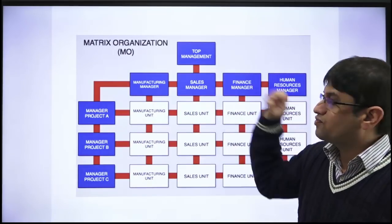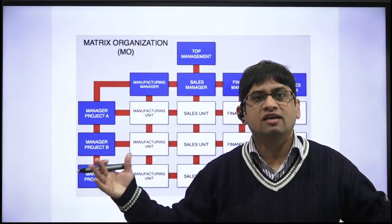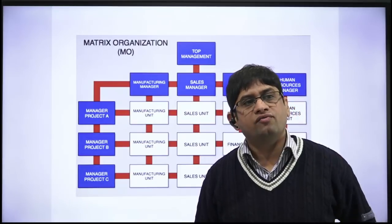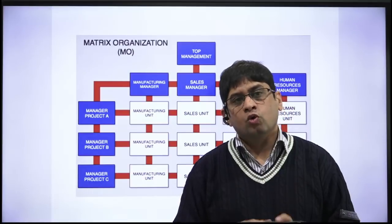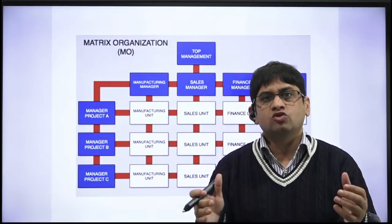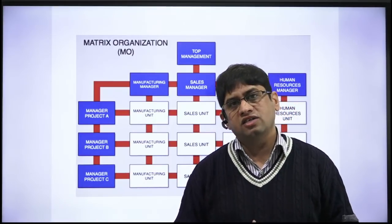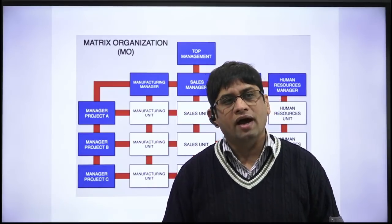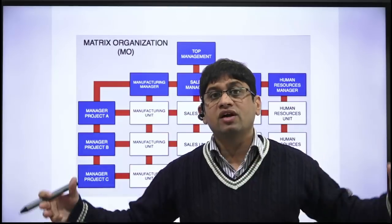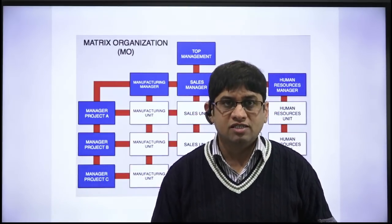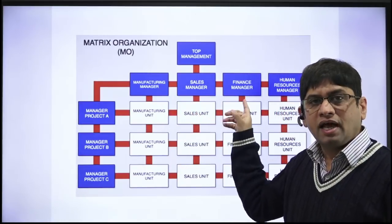If a civil department gets the project, all civil engineers are there but other functionalities are missing. In any project, there is a requirement of civil engineers, finance people, and personnel people — but the department that gets the project may lack the other functionalities. That is a real-time trouble. As an organization grows more complex and larger, its projects become more complicated, and there is always a need for cross-functional teams.